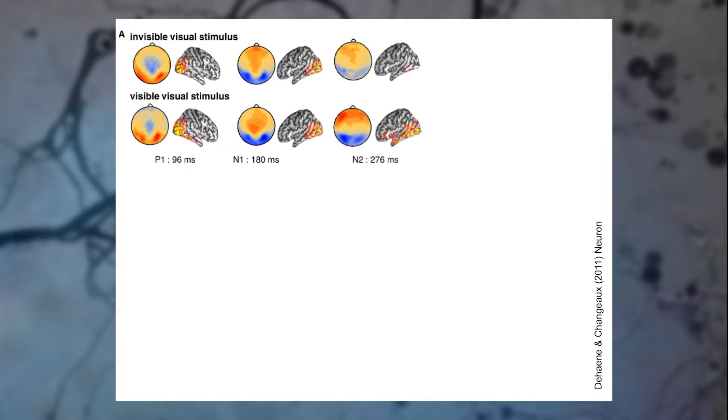By about a quarter of a second after stimulus onset, things start to get really interesting. Now we can see that there is much more brain activity in the case where the target survived the attentional blink and was seen, as compared to the upper case where it was not seen. In the case where it was seen, so in the lower case shown here, the activity is associated with the N2 signal.